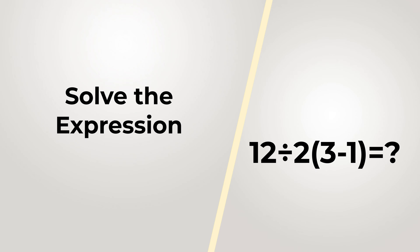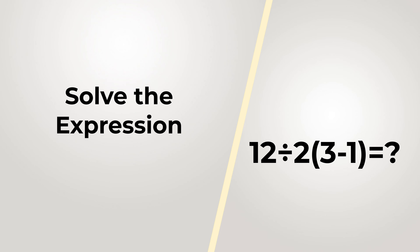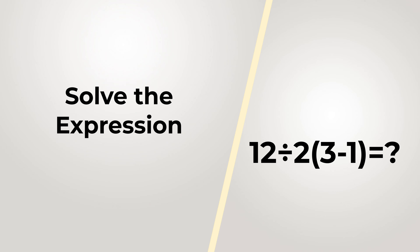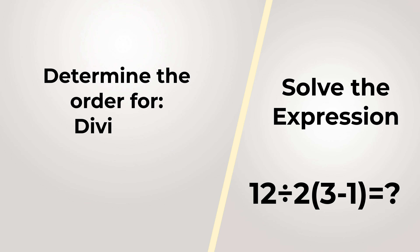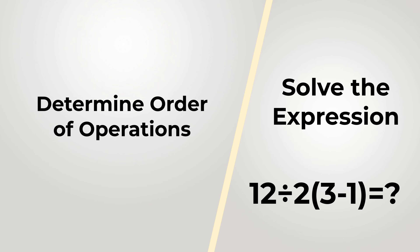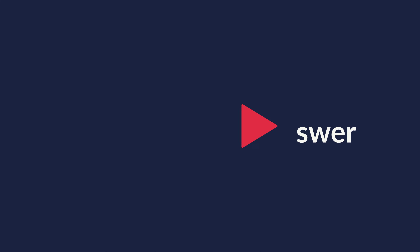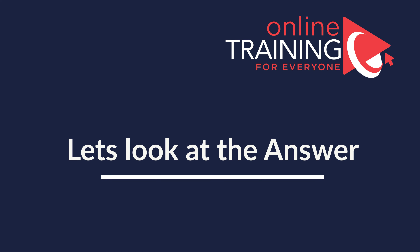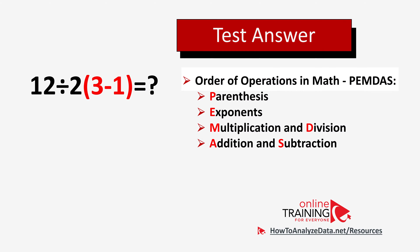Hopefully you've nailed this question and now know how to answer similar problems on the test. Here's the next interesting question, which is easy to understand but you will have a lot of fun solving. You need to calculate the expression: 12 divided by 2, then multiplied by the value in parentheses, which is 3 minus 1. There are three operations here — division, multiplication, and subtraction. All you need to determine is which one to do first, second, and third.